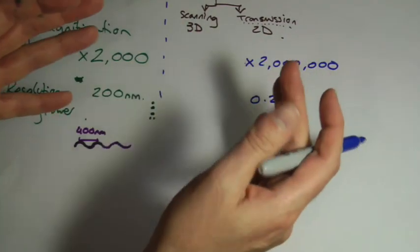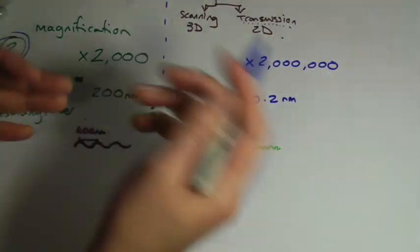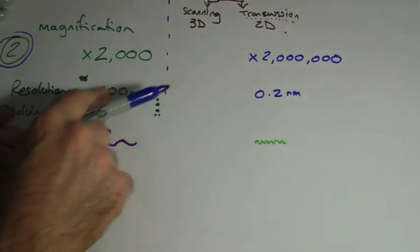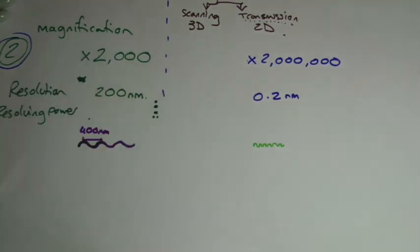You can build a really, really big lens that will give you massive magnification, but it doesn't matter if you can only resolve down to here. So that's the difference between the resolution and the magnification.